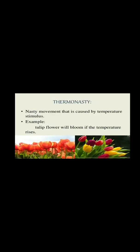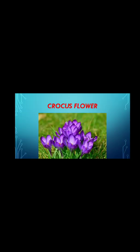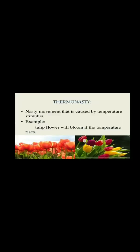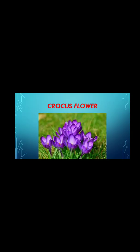The next type of nastic movement is thermonasty — a kind of movement in a plant part in response to temperature. For example, the Tulip flower blooms as temperature increases. The next example is the Crocus flower, which opens within a few minutes due to a relative increase in growth rate on the inner side of its petals. These two flowers — Tulip and Crocus — are examples of thermonasty.